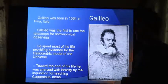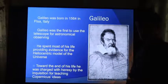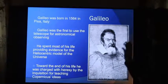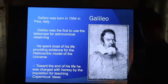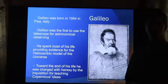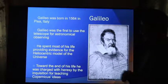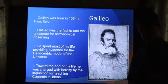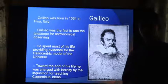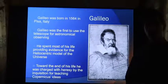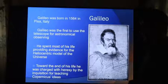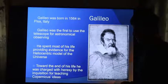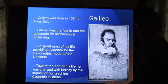Galileo is born in 1564. He's the first to use a telescope for astronomical observations. He was not the inventor of the telescope, but he created a telescope that was of such high quality compared to what existed before that he essentially did invent the astronomical telescope. Galileo spends most of his life providing evidence for the heliocentric model of the universe. Copernicus' book has been banned by the church by the time of Galileo. Eventually, Galileo runs afoul with the church and toward the end of his life he's finally charged with heresy for supporting the theories of Copernicus.